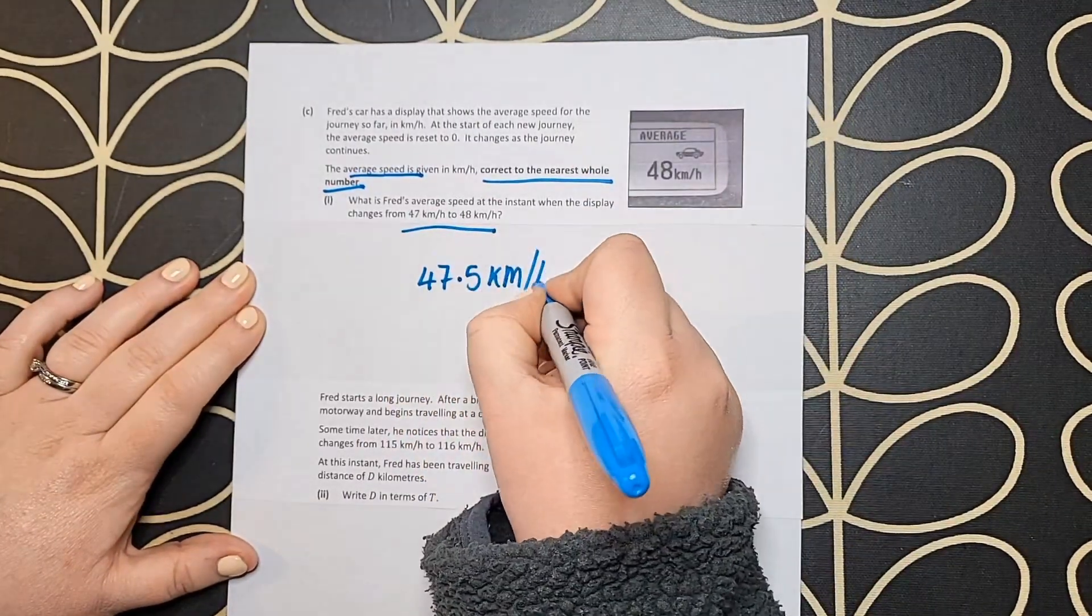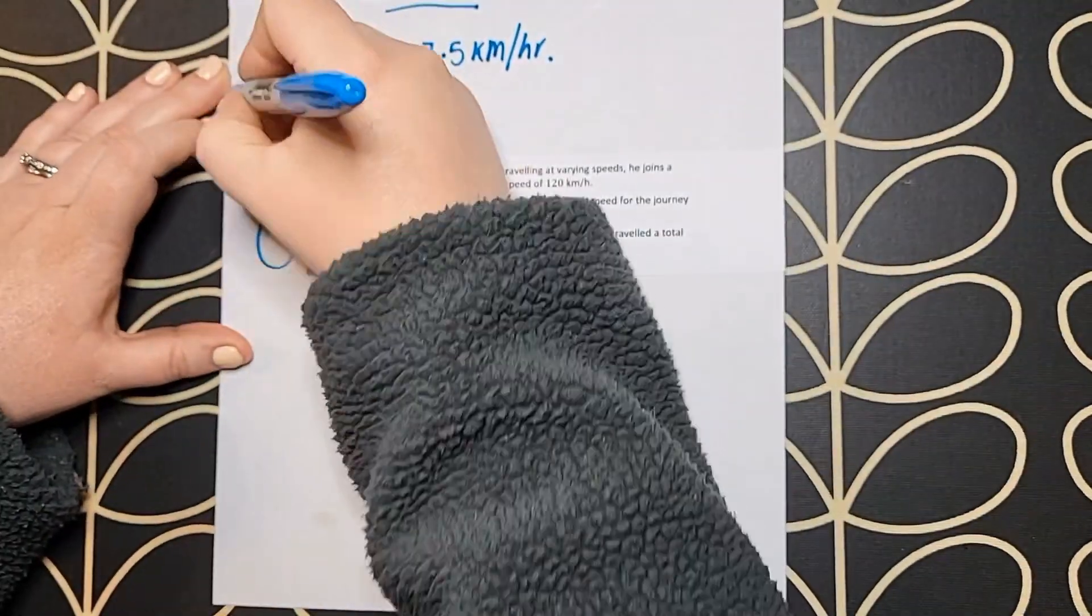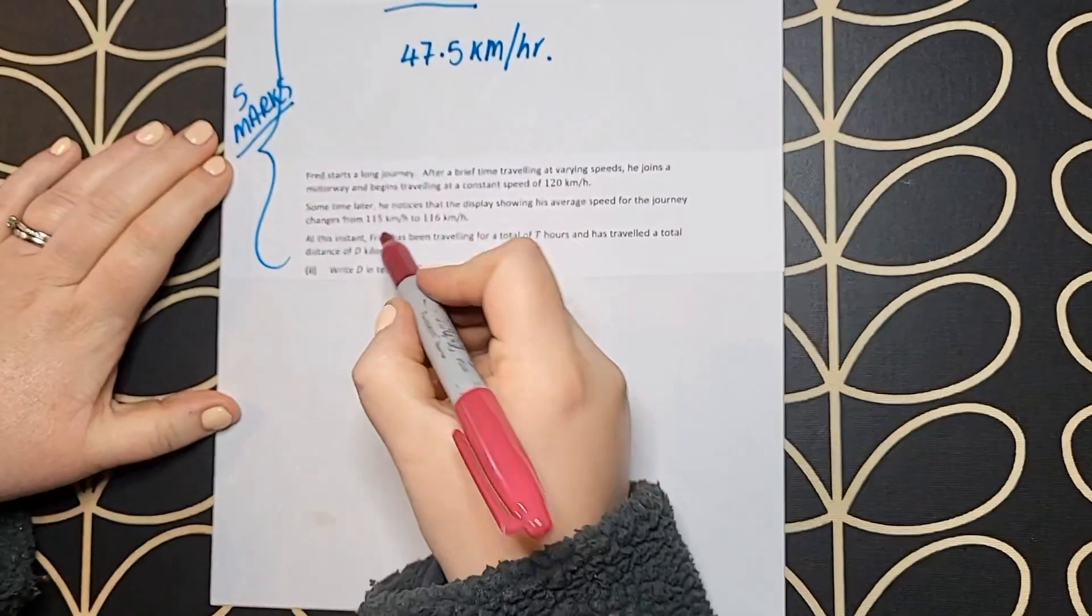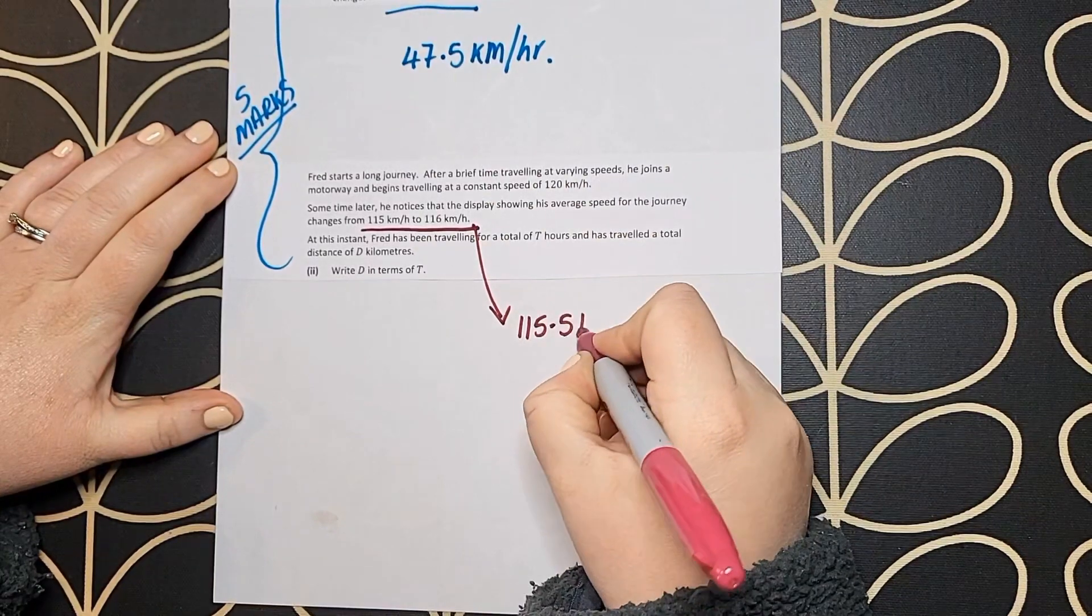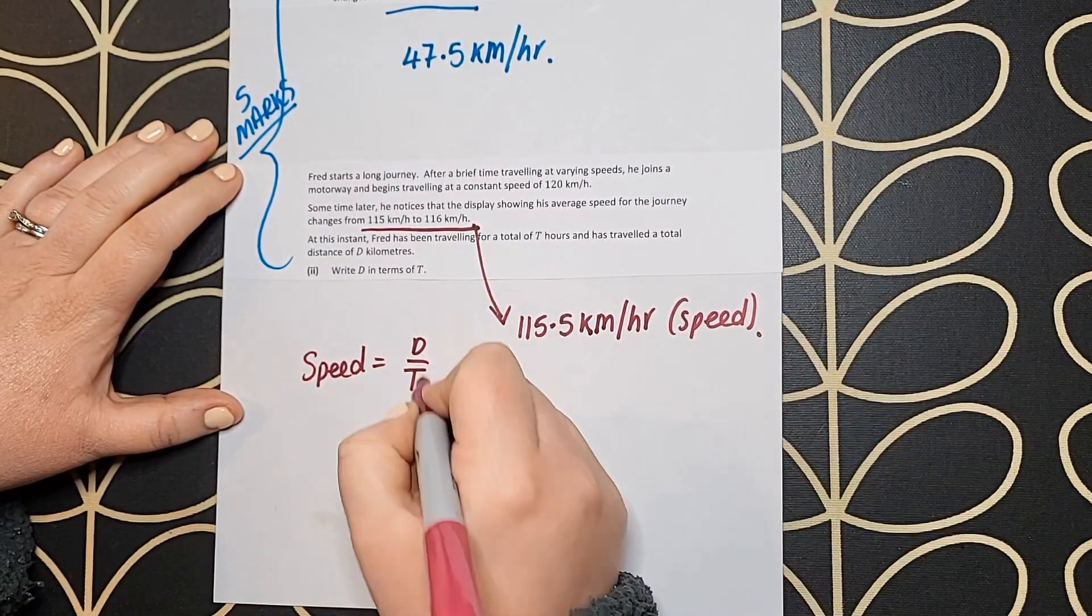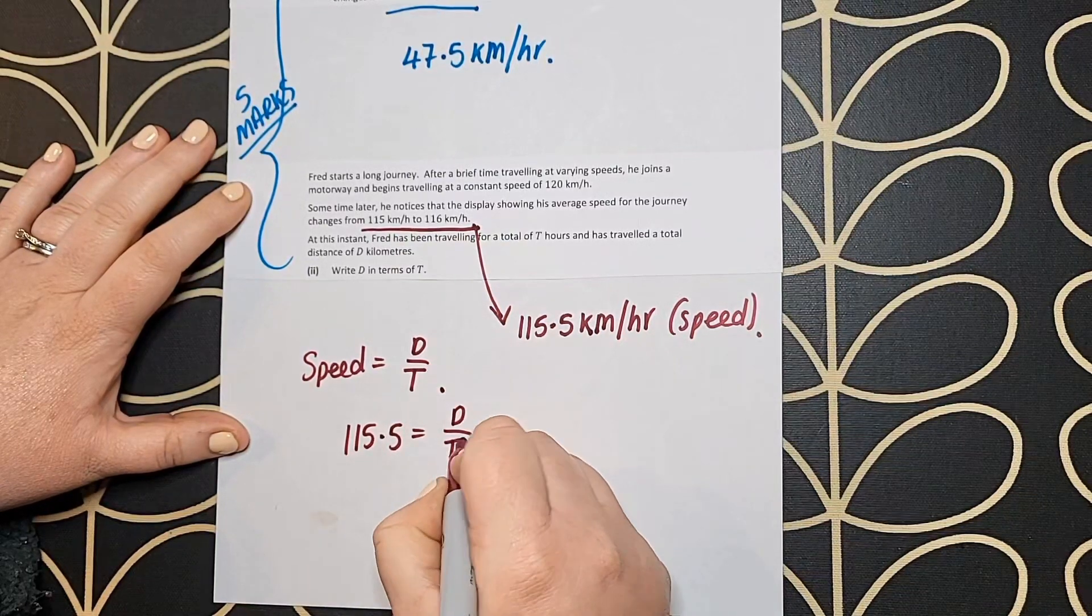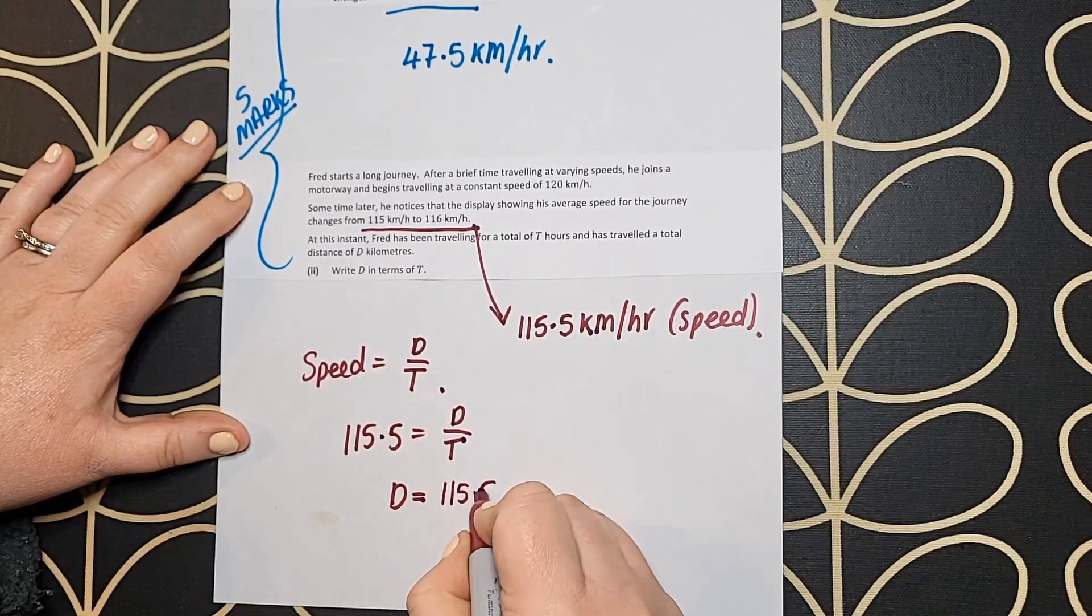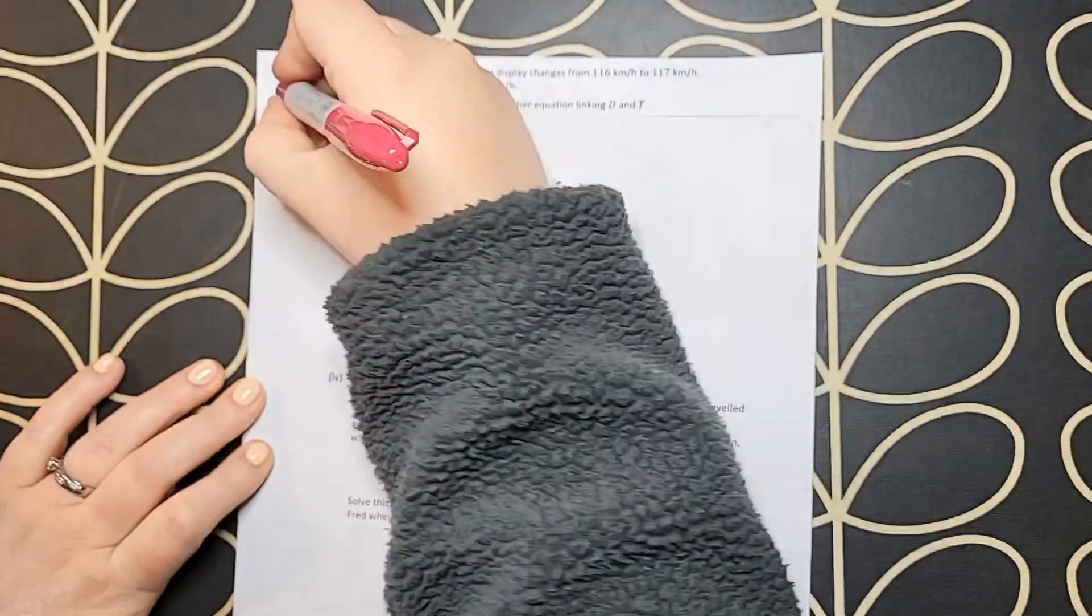This is a really quick one. Just by reading the information, when it's rounded to the nearest whole number, once it hits 47.5 it'll round up to 48. In part 2, you're literally just representing 115.5 in terms of the speed formula where you have d and t for distance and time.